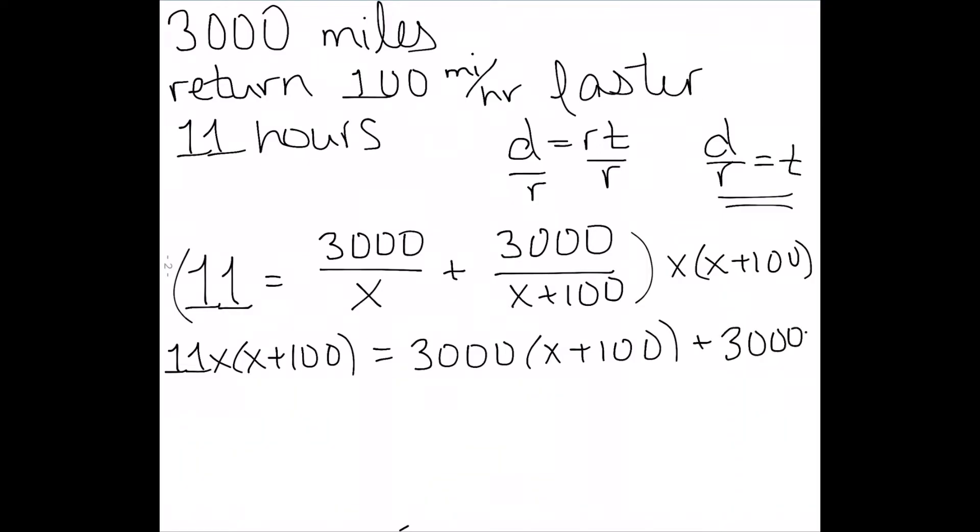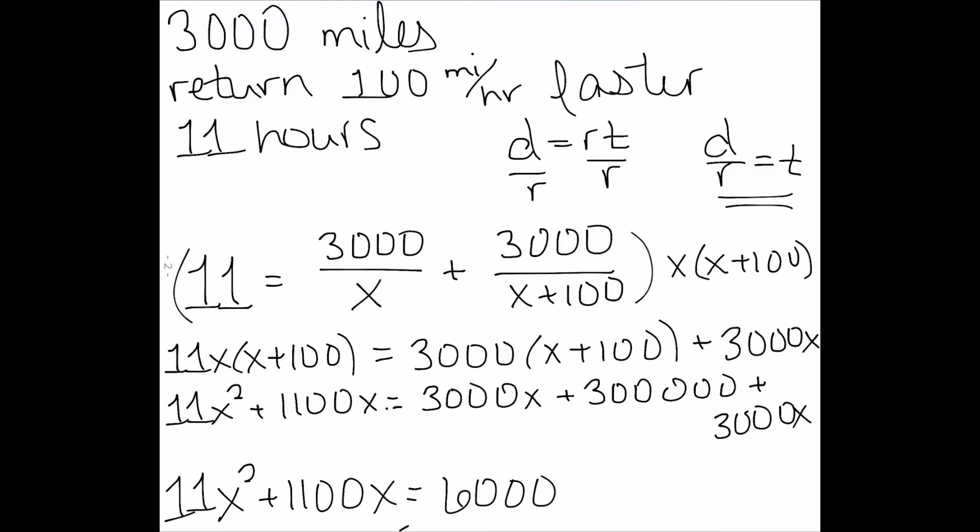Plus 3,000x, since the x plus 100 will cancel. This gives me 11x squared plus 1100x is equal to 6,000x plus 300,000.